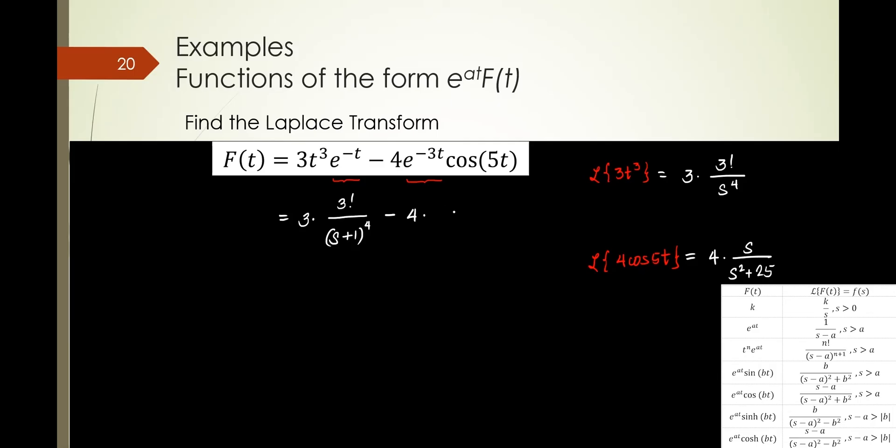S minus negative 1. So it becomes an s plus 1 to the 4 minus 4 times. What will be the numerator, guys? There's a shifting because there's an e. What's the a? S plus 3. Very good. What about the bottom? What will it be? The s plus 3 quantity squared plus 25.